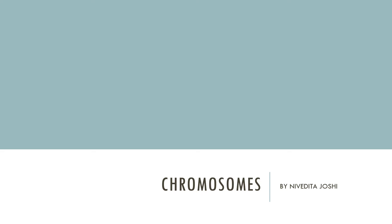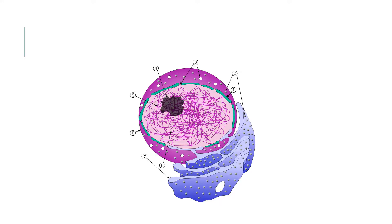Before we go to the topic of chromosomes, we have to start from the nucleus, because chromosomes are found in the nucleus. Here is an activity for you — the nucleus is shown and you can see chromatin fibers in purple in the diagram. So many parts are numbered; just try to find them out. You will get all the answers at the end of this video.